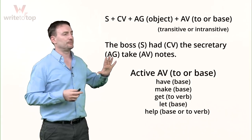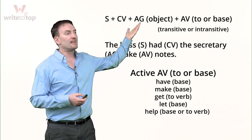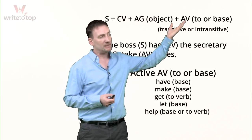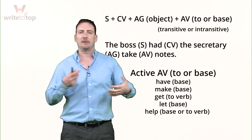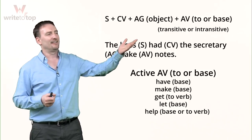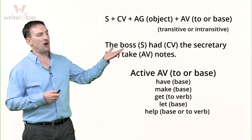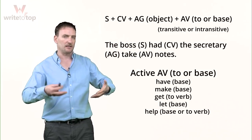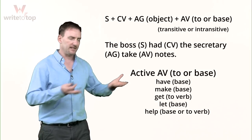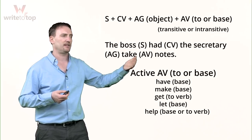Let's look at it all together. Here is the equation: you have your subject and your causative verb, and the agent is the object of the causative verb, so you still have your SVO structure, plus the action verb. The action verb can be transitive or intransitive — with or without an object. So: the boss (subject), had (causative verb — delegating), the secretary (agent — she will do the action), take (action verb), notes (object).